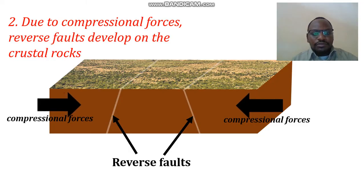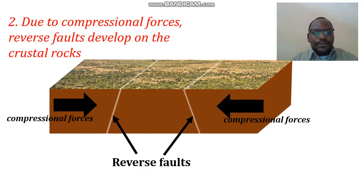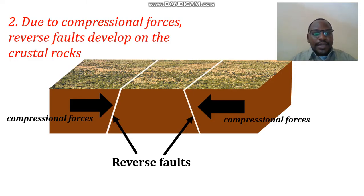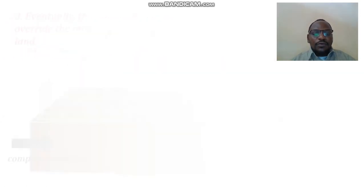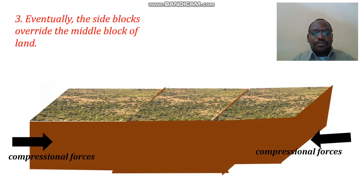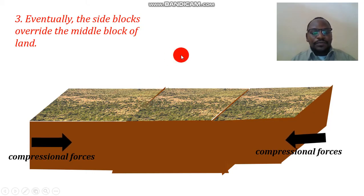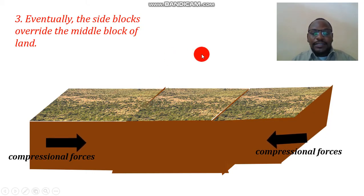Due to the compression, we have the development of two reverse faults on the crustal rocks or block of land. The reverse faults are very clearly formed. Next, the crustal rocks fracture along the lines of weakness — we can see the fractures, which are now the faults, appearing at the surface of the land.